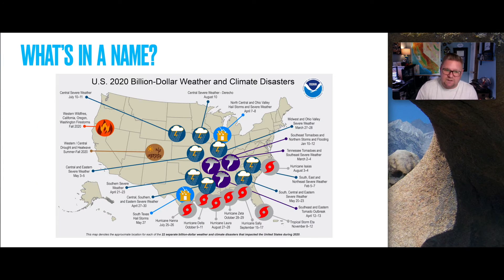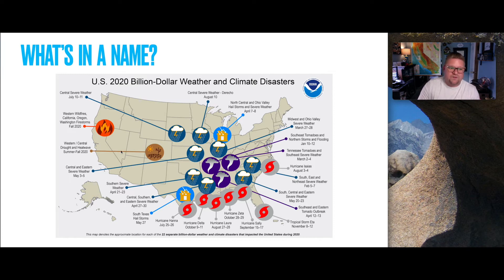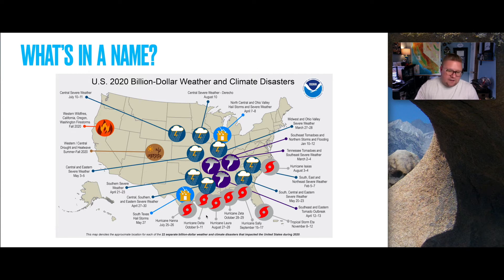Looking at a 2020 billion-dollar weather and climate disaster diagram from NOAA — the National Oceanic and Atmospheric Administration — we can see incredible forest fires in Northern California and Oregon, a drought heat wave in Western Central California, and on the East Coast, Hurricane Isaias, and major hurricanes Hannah, Delta, Laura, and Zeta. NOAA tracks all this extreme weather information.